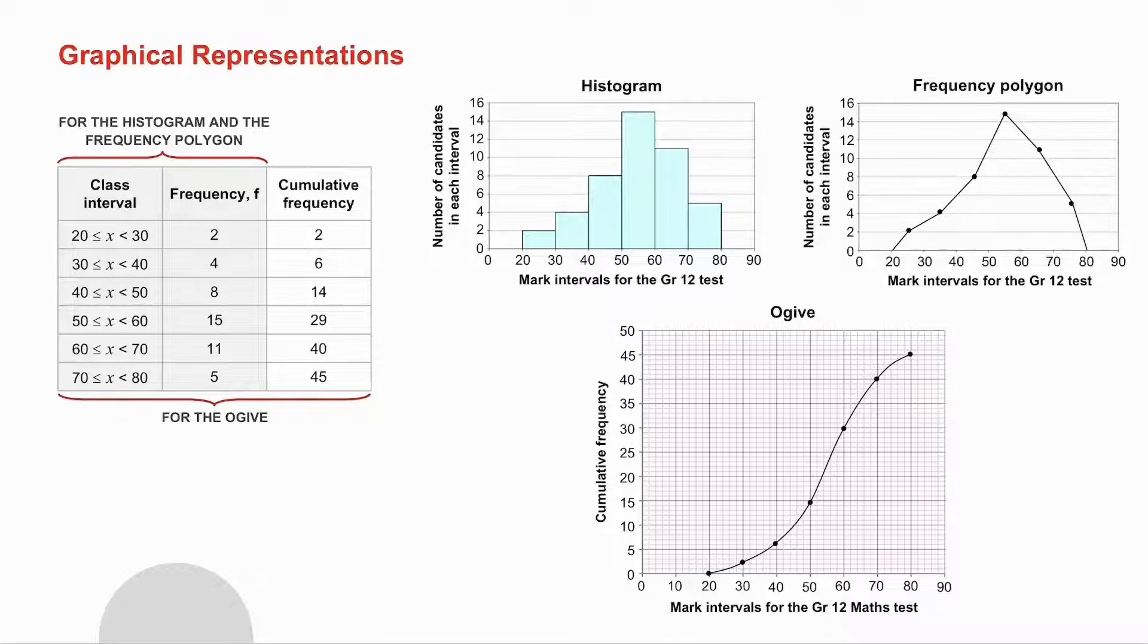When you plot your ogive, you plot the highest value. So you plot 30, 2 and 46, all the way up to 80, 45. In the ogive, you have to ground it to the smallest value. So you have to ground down to the point, in this case, of 20.